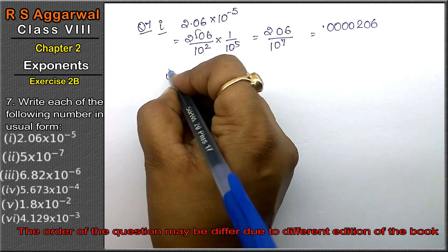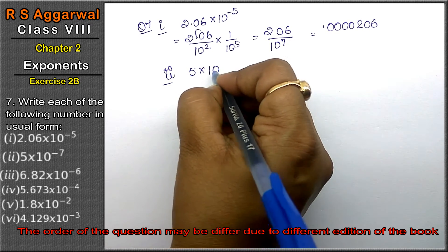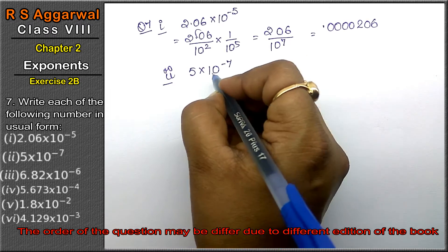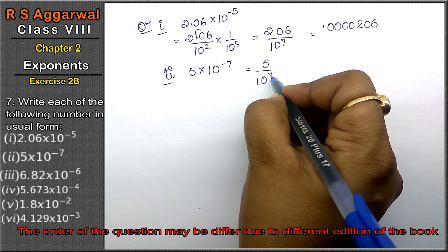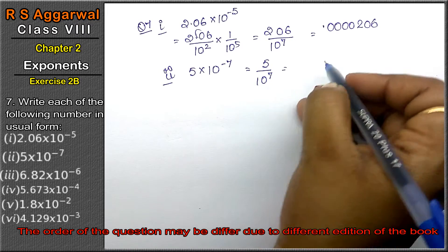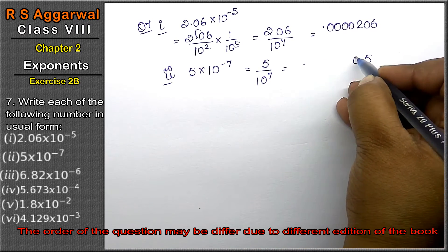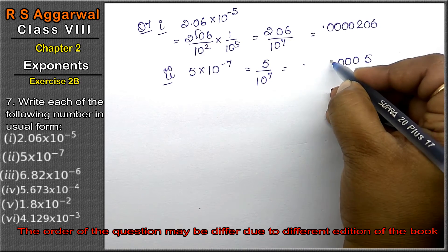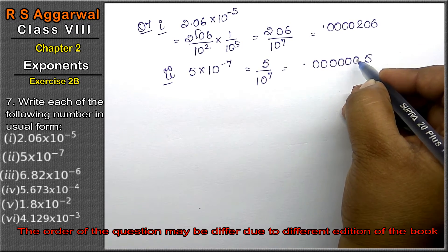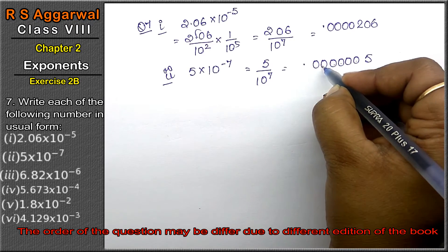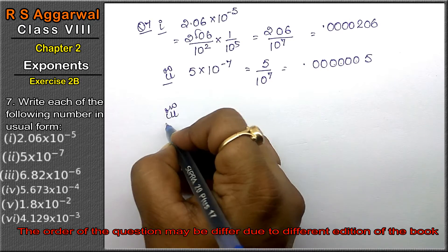Let's do the second part: 5 × 10⁻⁷. That means 5 upon 10 to the power 7. After 7 digits we place the point — zero point, then six zeros, then five: 0.0000005. That is the answer.